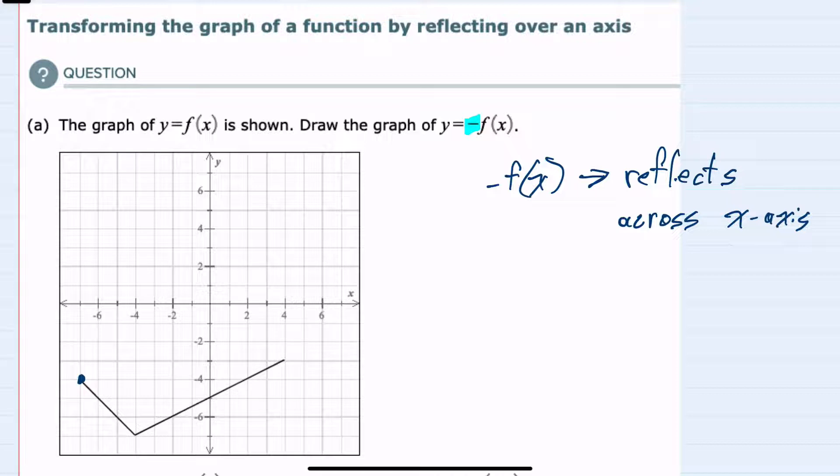Looking at a few of these points, we can see that for the original point here on f of x, when x is negative 7, y is negative 4. Now when x is negative 7, y will be a positive 4. Again we have the opposite of the y value. And when x is negative 4, instead of y being negative 7, it will now be a positive 7.